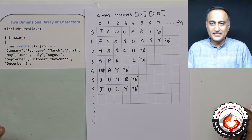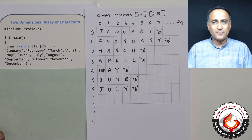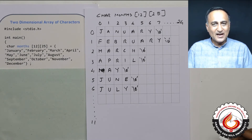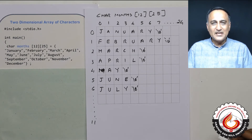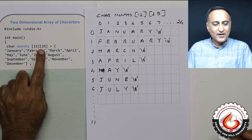A two-dimensional array of characters has behavior which is a little different from a two-dimensional array of numbers, floats, ints, or whatever it is. Suppose I want to store the months of a year in a two-dimensional array. I can't store them in a single-dimensional array because there are 12 months and each month has varying length. So I'm going to declare a character array of two dimensions having 12 rows and 25 columns.